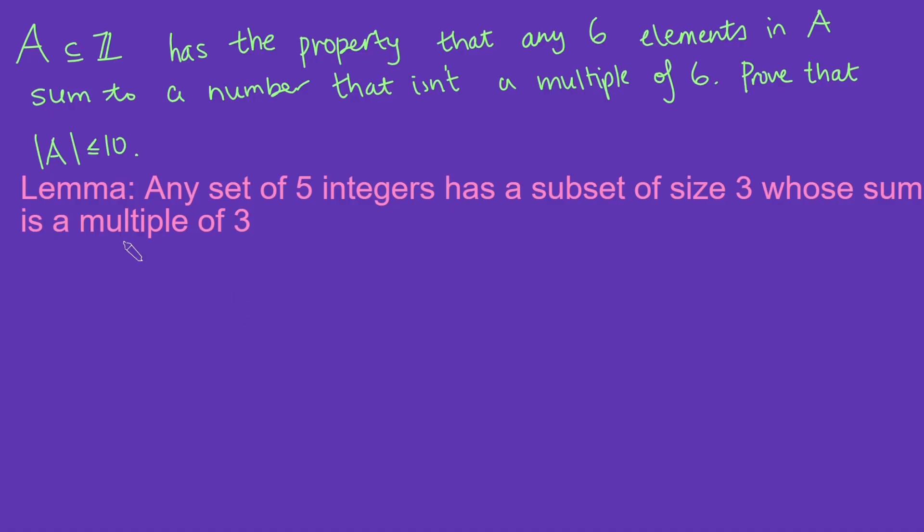To start our proof, we're going to first prove a lemma. This lemma says that any set of five integers has a subset of size three whose sum is a multiple of three. In other words, if you give me any five integers, there will be a subset of those five, a subset of size three, and the sum of those numbers in that subset sums to a multiple of three.